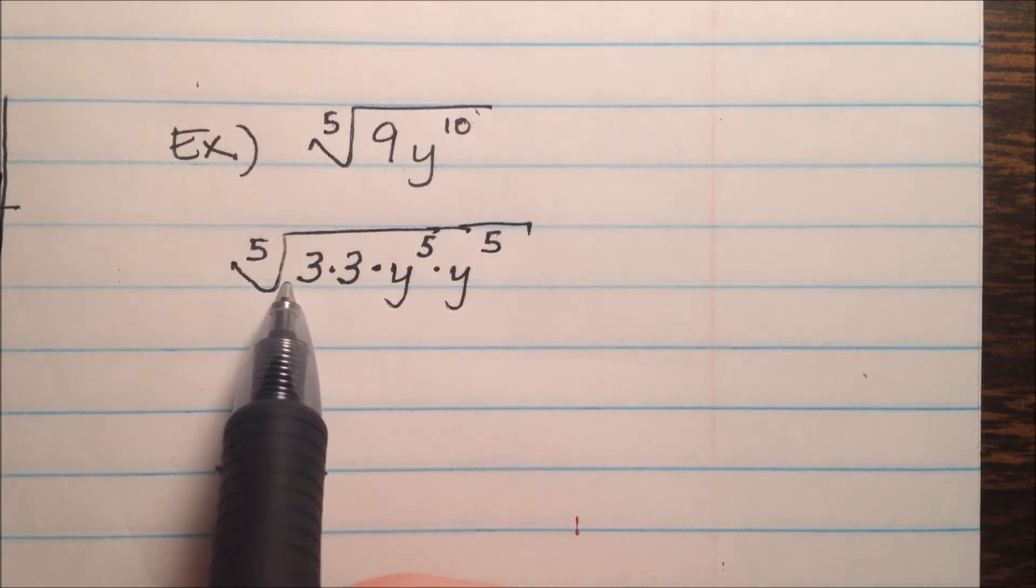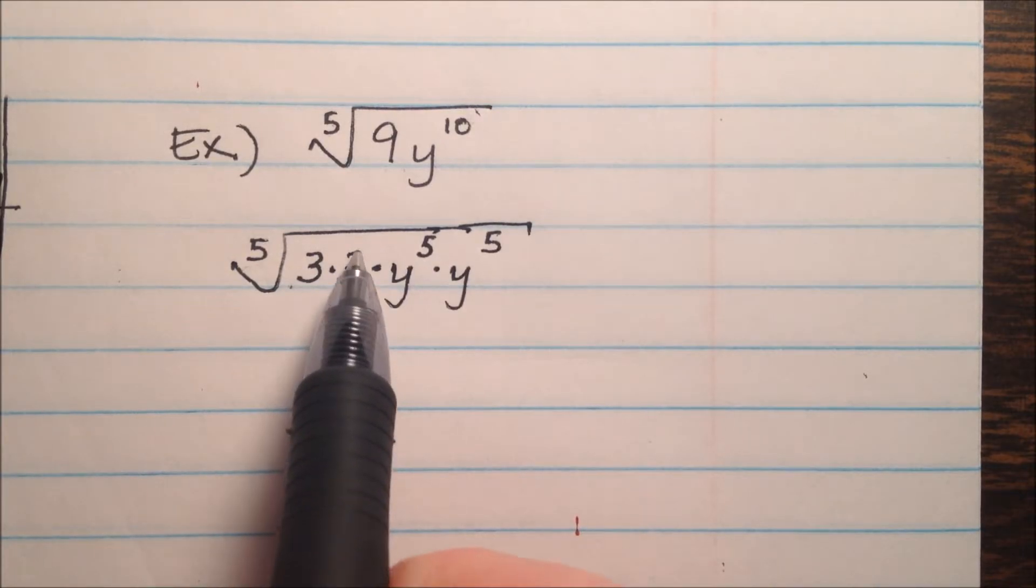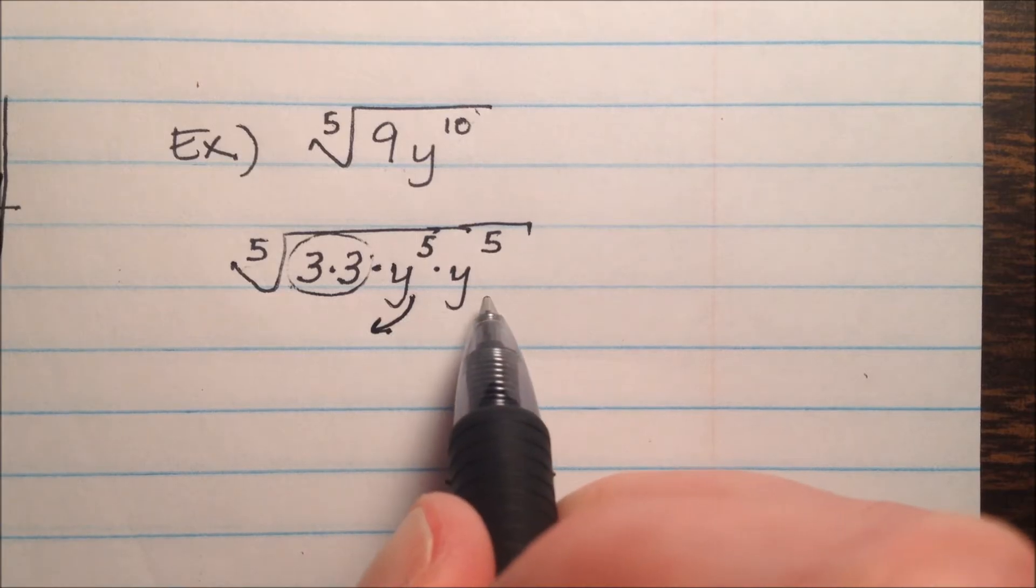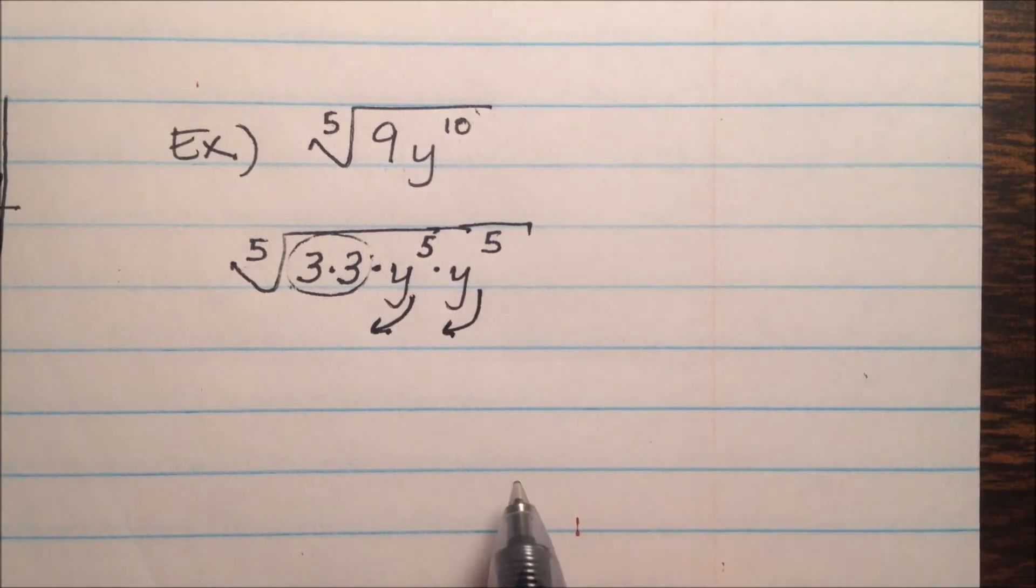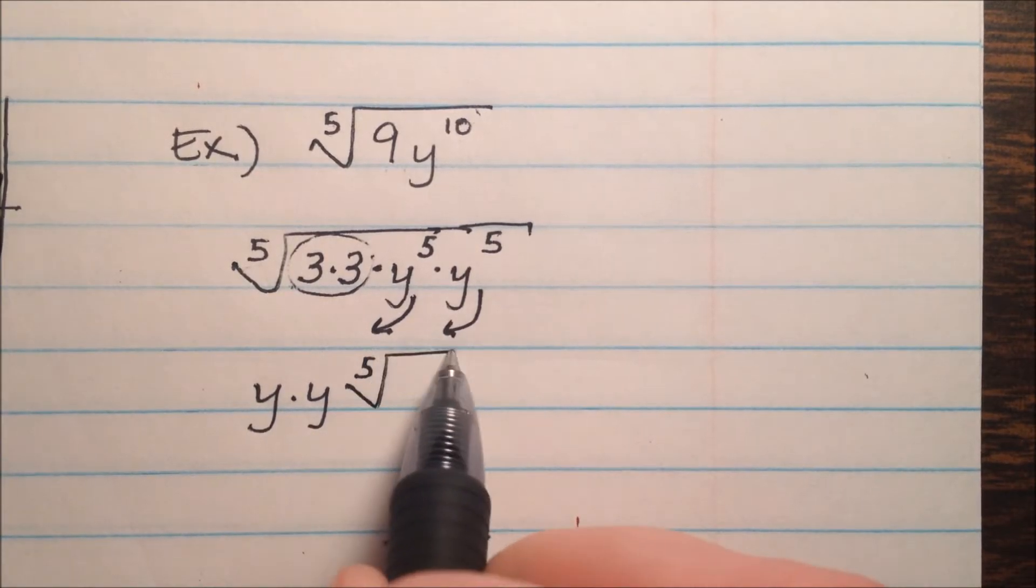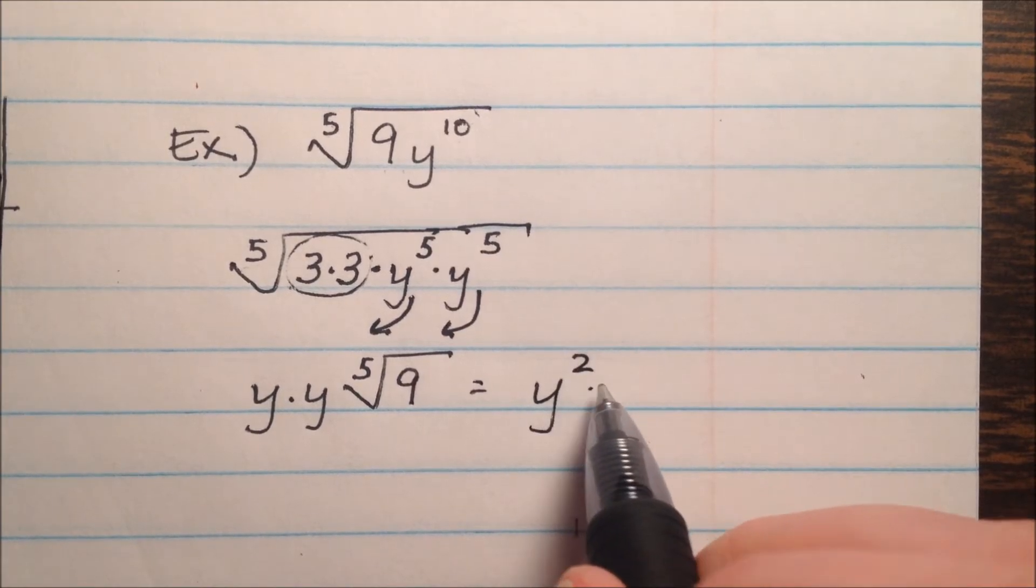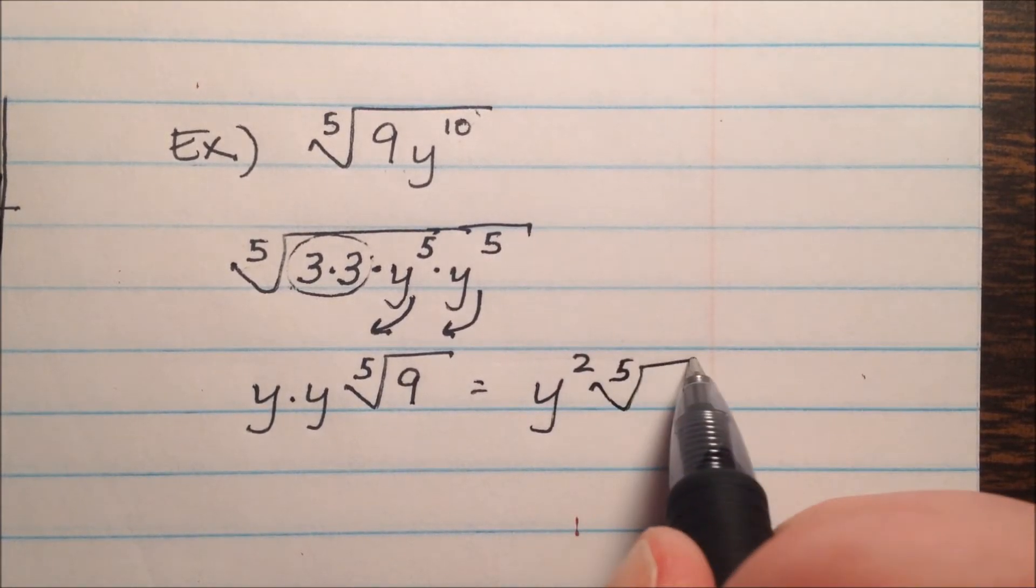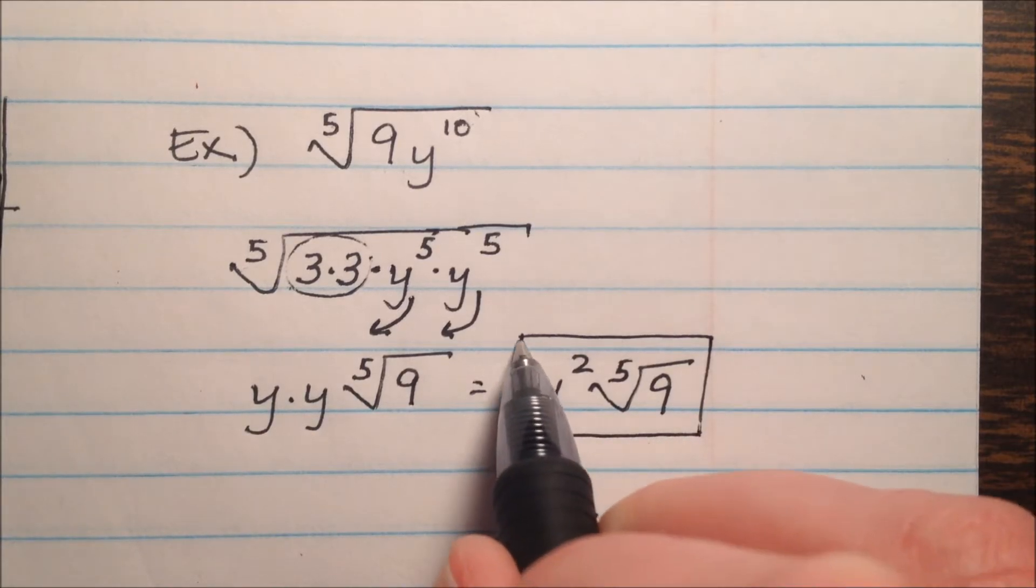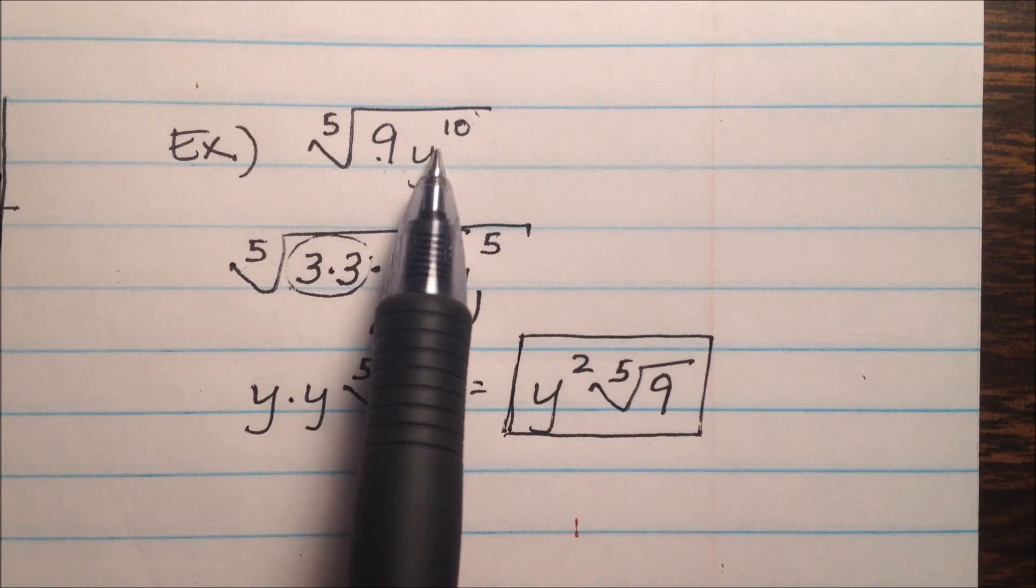So, these 3's, I'm looking for groups of 5, but I've only got 2 3's, so that's not enough. So they're going to stay in here. But this group of 5 y's will come out, and this group of 5 y's will come out. So on the outside, I'll really have y times y times the 5th root of 9, which ultimately will be y squared times the 5th root of 9. And that will be the final answer simplified for the 5th root of 9y to the 10th.